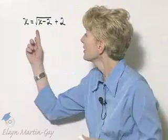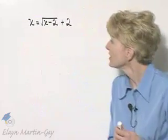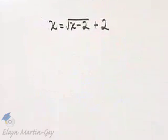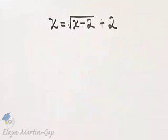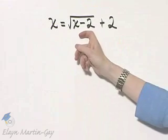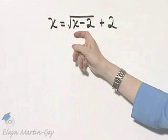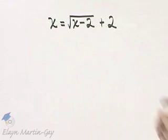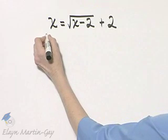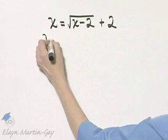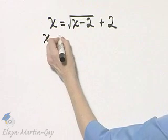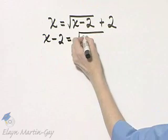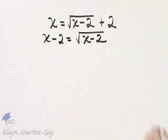Let's look at our equation: x equals the square root of x minus 2, plus 2. Don't forget what I mentioned — if possible, isolate a radical. We will isolate this radical, so I'll subtract 2 from both sides, giving us x minus 2 equals the square root of x minus 2.